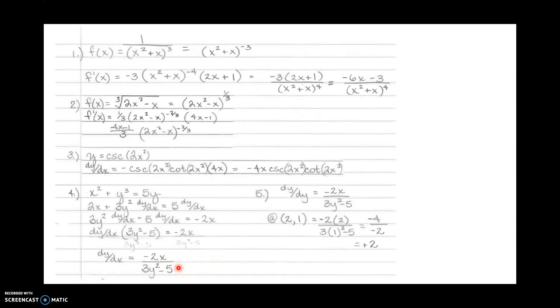For number five, it says find the slope of the tangent line at the point 2, 1. That's the derivative, so I'm looking for the derivative at 2, 1. We just found the derivative to be negative 2x over 3y squared minus 5. Plug in 2 for x and 1 for y, and that gives us a positive 2 for the slope of the tangent line. They just asked for the slope, not the equation of the tangent line.